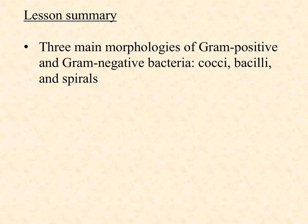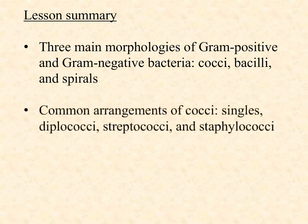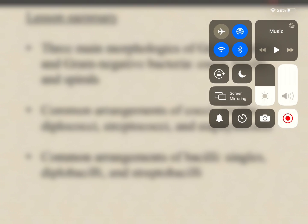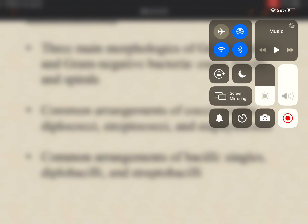Let's summarize. There are three main morphologies of both gram-positive and gram-negative bacteria: the cocci, the bacilli, and the various forms of spirals. The common arrangements of cocci are singles, diplococci, streptococci, and staphylococci. The common arrangements of bacilli are singles, diplobacilli, and streptobacilli. There's no such thing as staphylobacilli, just because the plane of division is always perpendicular to the length of the cell. Good luck with this. Study hard. I'll see you next time.